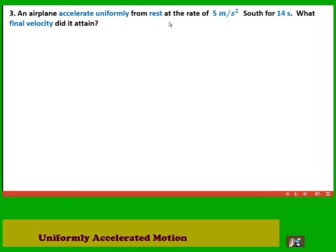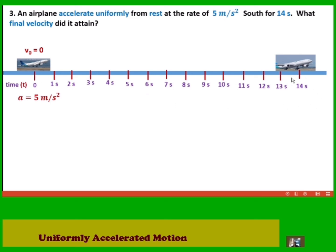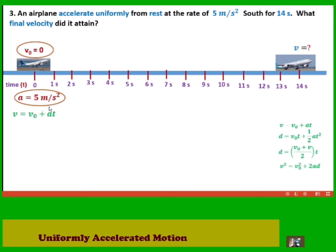An airplane accelerates uniformly from rest at the rate of 5 meters per second squared south for 14 seconds. What final velocity did it attain? The airplane starts from rest so initial speed is zero, acceleration is 5 meters per second squared, and time is 14 seconds. Using equation 1 and substituting: initial speed is 0, acceleration is 5, and time is 14 seconds. Simplifying: final speed equals 5 times 14, which is 70 meters per second.